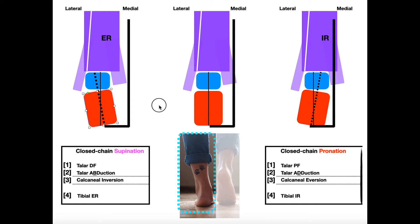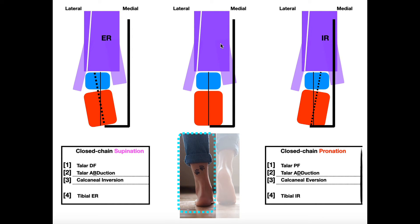The blue right here is the talus, and red is the calcaneus. Over here in the middle, this setup is what we have in subtalar joint neutral. Now if we look at this black line right here — this line is not the midline of the body, but it's more or less representing distance from the midline of the body. This line is in the same spot on each of these pictures, so it's going to allow us to see the movement of the tibia and fibula relative to the calcaneus. Here's your subtalar joint neutral — the midline of the calf and the midline of the calcaneus are in line with each other.